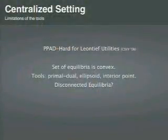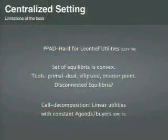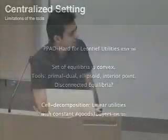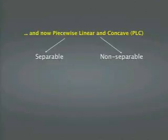Apart from hardness, there are also limitations of the tools used so far. In all cases for which you can compute equilibrium, the set of equilibria is convex, and the tools used—primal-dual, ellipsoid, interior point—are those for convex programming. When you have disconnected equilibria, it is unlikely these tools alone can extend to that case. However, one technique that does not face this problem is cell decomposition, used earlier for the simple case of linear utilities with a constant number of goods or buyers. We now use cell decomposition to handle the PLC case.